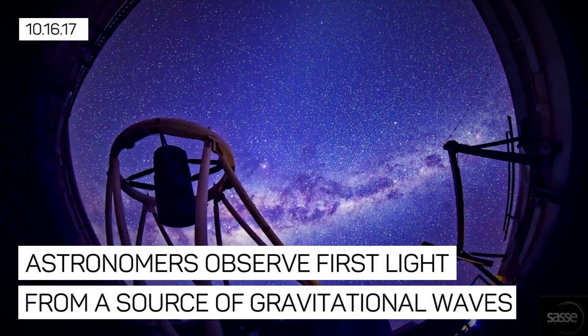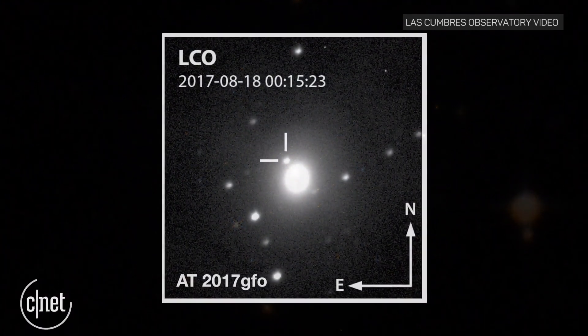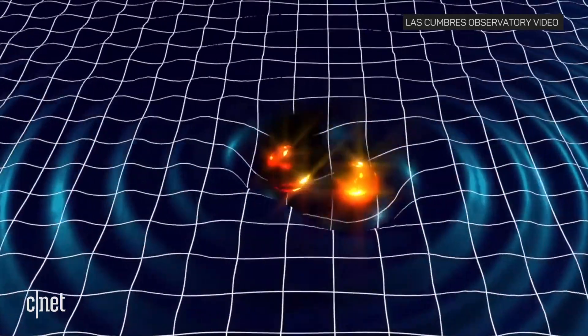Astrophysicists and astronomers from the European Southern Observatory in Chile have detected the first visible signs of an object that is believed to be causing gravitational waves.